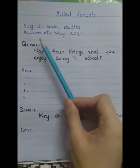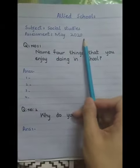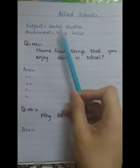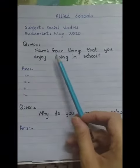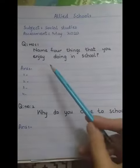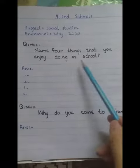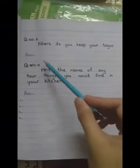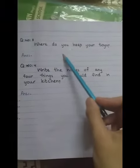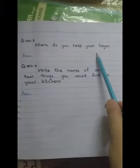Here is your main assessment. Question number 1: Name 4 things that you enjoy doing in school. Question number 2: Why do you come to school? Question number 3: Where do you keep your toys?